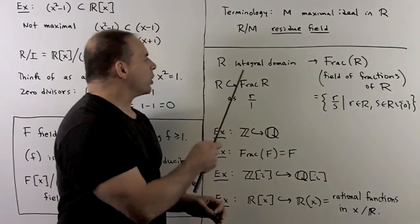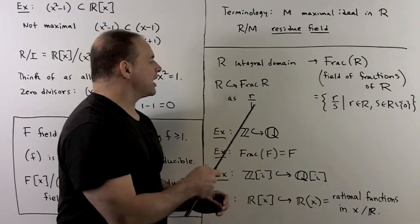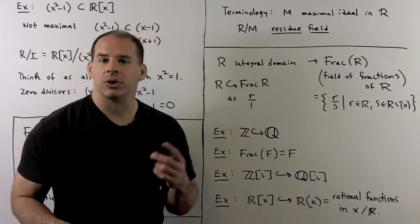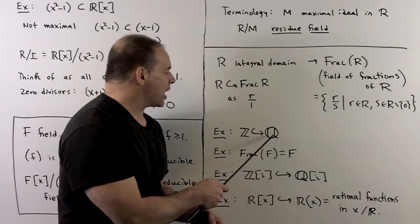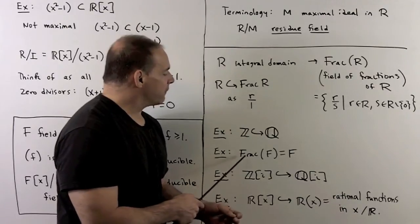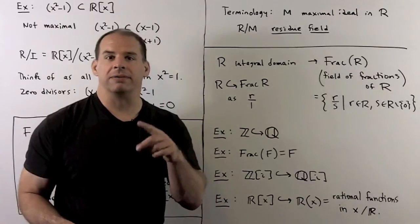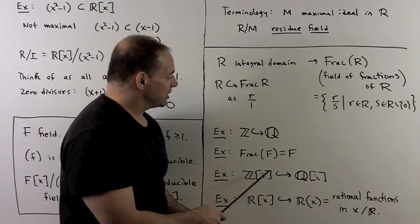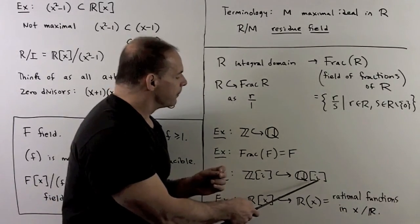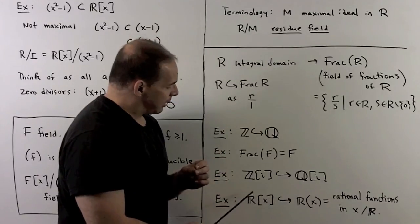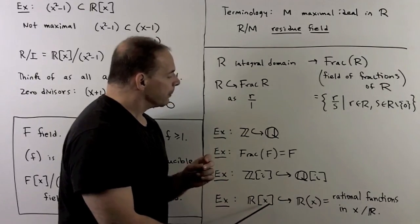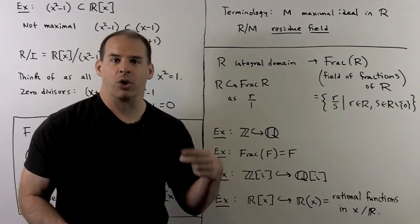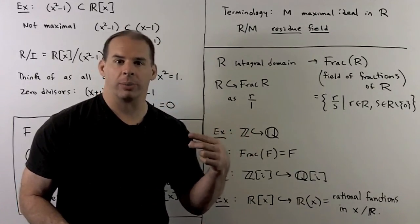An integral domain sits inside its field of fractions as elements of the form r/1. For examples: the integers sit inside the rationals. If we take the fraction field of something already a field, we just get the field back. We have the Gaussian integers sitting inside ℚ(i). And if we take the polynomial ring in X over ℝ, the field of fractions is just the rational functions in X over ℝ — polynomials over other polynomials.